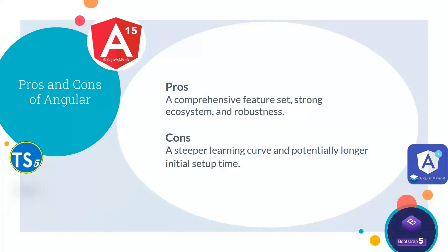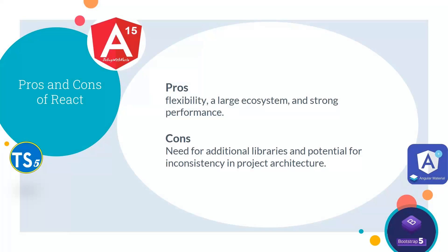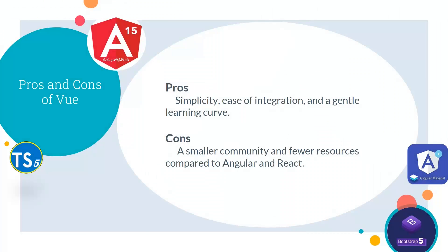In the pros of Angular, we can talk about its comprehensive feature set with a strong ecosystem and robustness. But in its cons, it has a steeper learning curve and potentially longer initial setup time. In the pros of React, we can talk about its flexibility, large ecosystem, and strong performance. But its major cons are that it needs additional libraries and has potential for inconsistency in project architecture. The pros of Vue are its simplicity, ease of integration, and a gentle learning curve. But in its cons, it has a smaller community and fewer resources compared to Angular and React.